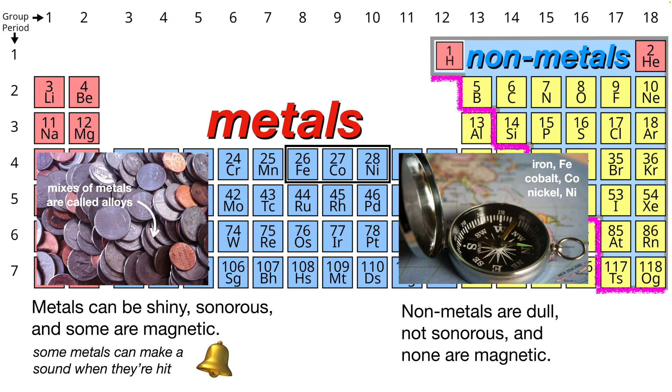Here, these three elements, iron, cobalt, and nickel, are the magnetic metals. So if you have an alloy with one of these metals in it, there's a good chance it will also become a magnetic alloy.